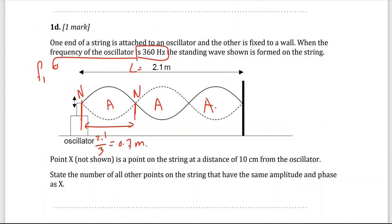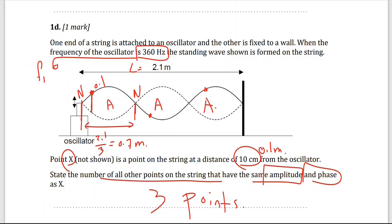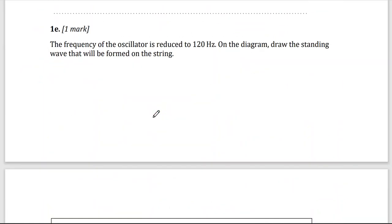Point X is not shown on the string, it is at distance 10 centimeters, which is 0.1 meter. State the number of all points on the string that have the same amplitude and phase. So 0.1, it will be around here. This is 0.7, so this is 0.1, and here, and here. So I will have three points.